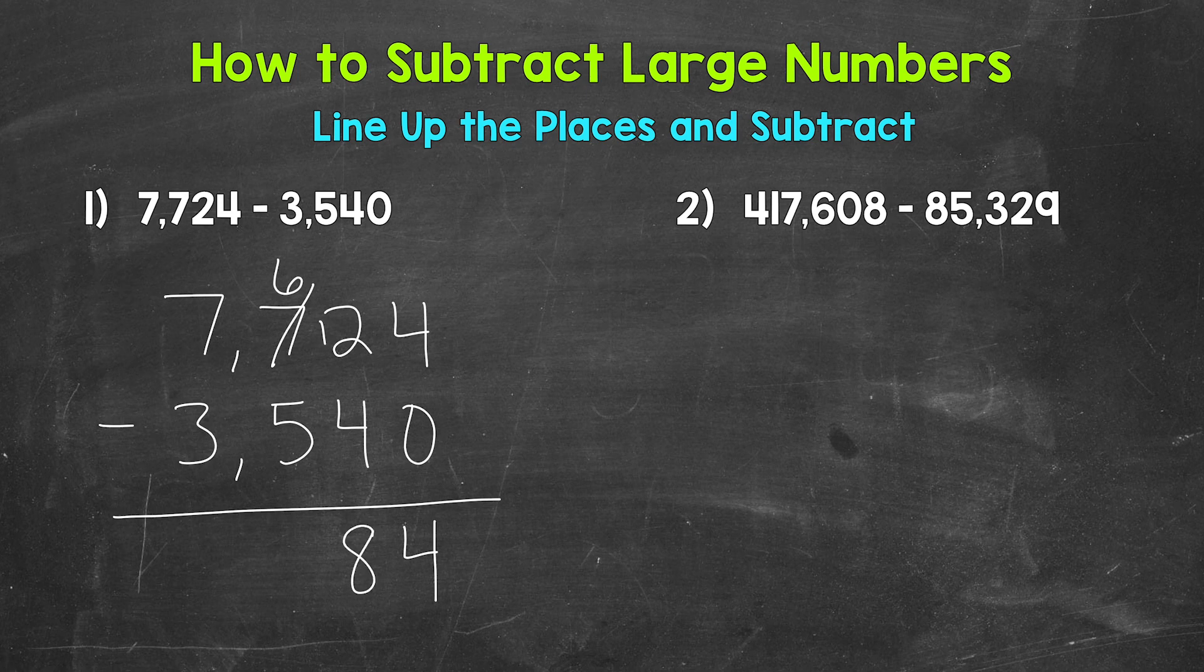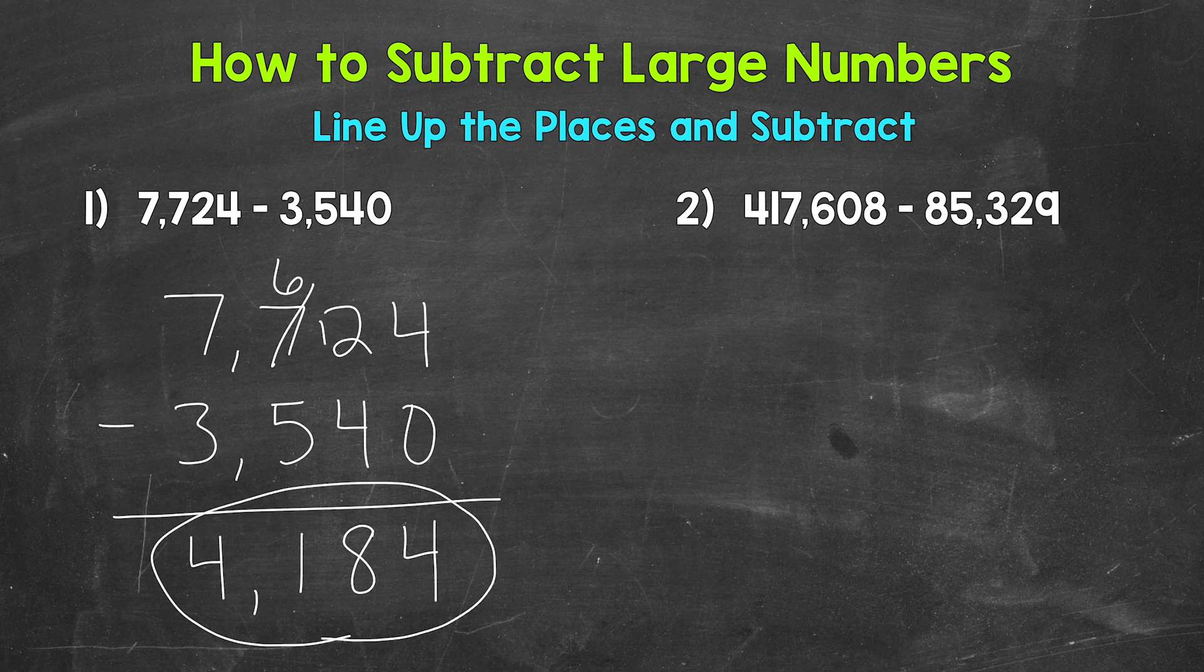Now we work our way left to the hundreds place, where we have six minus five, which is one. And then lastly, we have the thousands place. Seven minus three is four. We can place the comma in our answer, and we end up with 4,184.